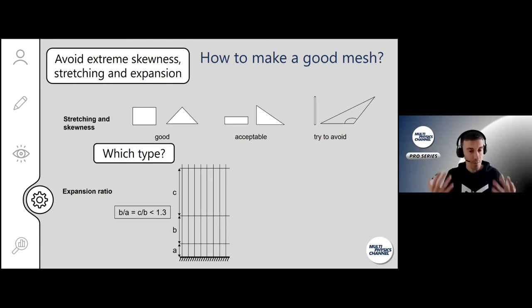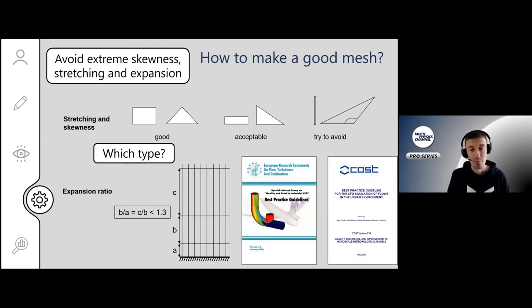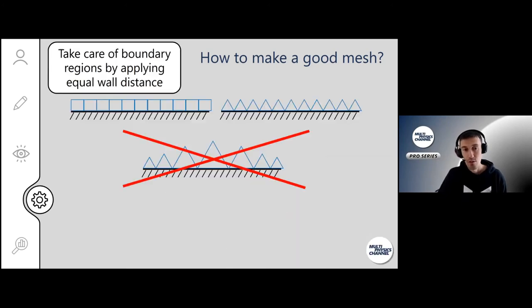But very important is your expansion ratio. The stretching you have—normally a typical guideline would be to not go above 1.3, so that every cell if you increase is not 30% larger than the next one. That's a typical guideline. Here are some best practice guidelines with a lot of information that you can access.